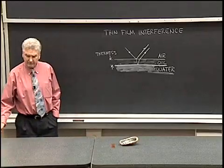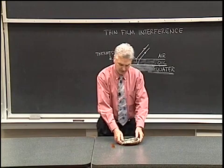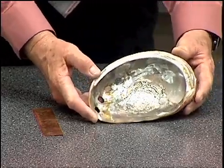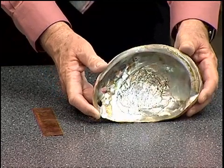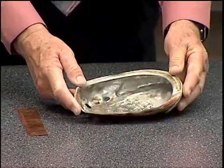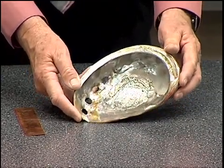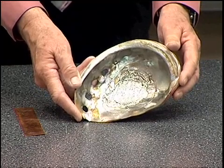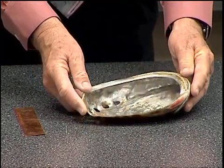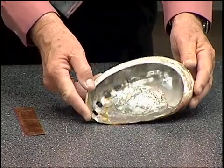We can have thin films of other materials. We can have a thin film such as we have on an abalone shell. Here I have an abalone shell, and we see that if we look at that from different angles we change the effective thickness, and where white light comes up, different colors get reflected depending upon the angle at which we view that and the thickness of the various parts of the films on that abalone shell.